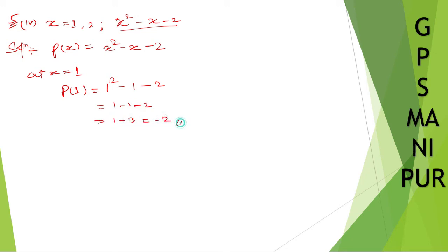So this is not the zero of the polynomial, okay. So P of one is not the zero of the polynomial.